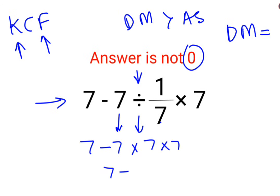So we have 7. Minus 7 multiplied by 7 is minus 49. Multiplied by 7 is minus 343. So answer for this question is supposed to be minus 336.